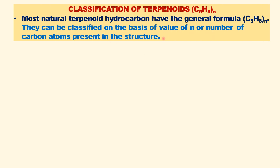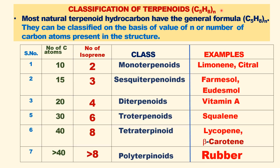How are terpenoids classified? They are classified based on the number of isoprene units in their skeletal structure. For example, if there are two isoprene units, it is called a monoterpenoid. Monoterpenoids consist of two isoprene units.